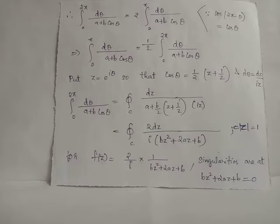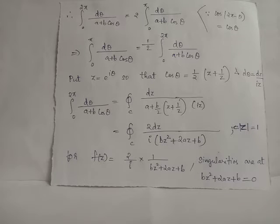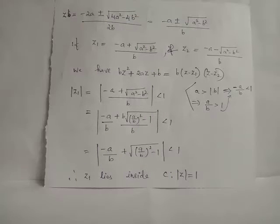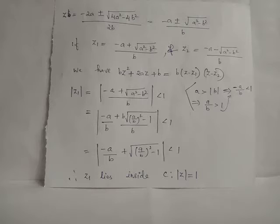In the denominator we have bz² + 2az + b, which is a quadratic expression in z. We find the roots to determine the poles: z = (−2a ± √(4a² − 4b²))/(2b), which simplifies to z = (−a ± √(a² − b²))/b.